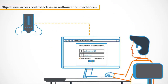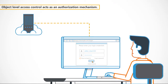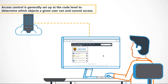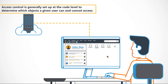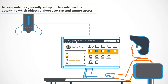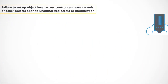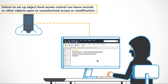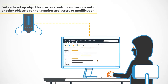Object level access control acts as an authorisation mechanism. Access control is generally set up at the code level to determine which objects a given user can and cannot access. Failure to set up object level access control can leave records or other objects open to unauthorised access or modification.